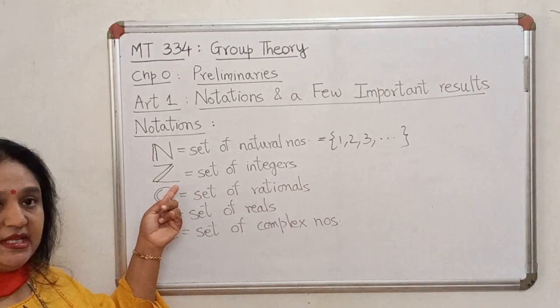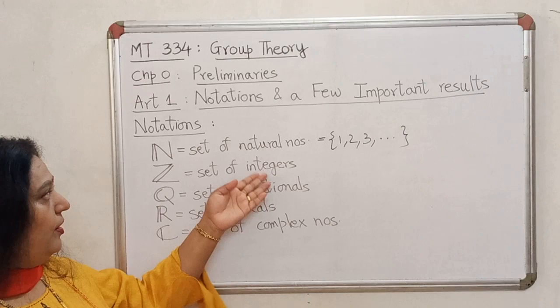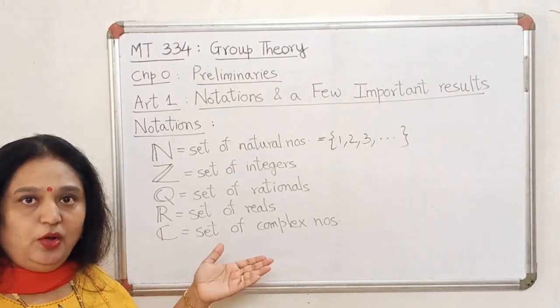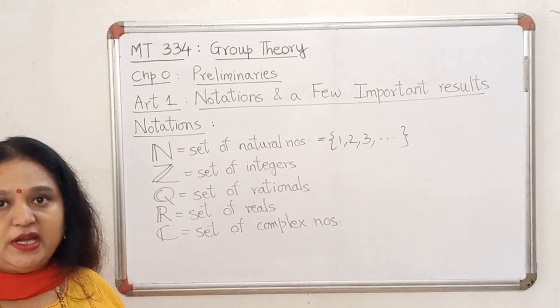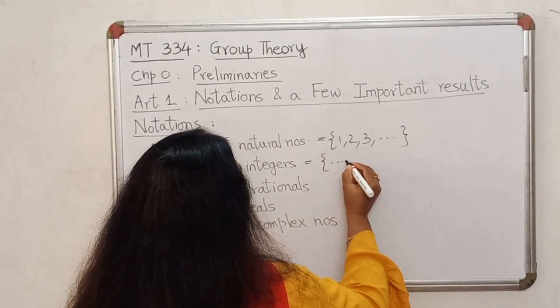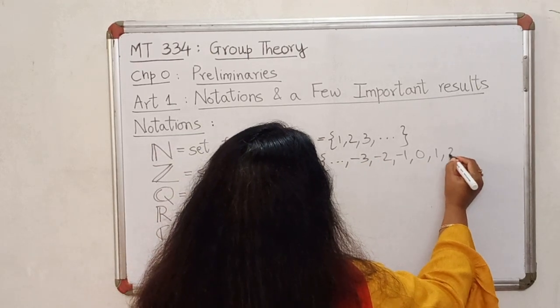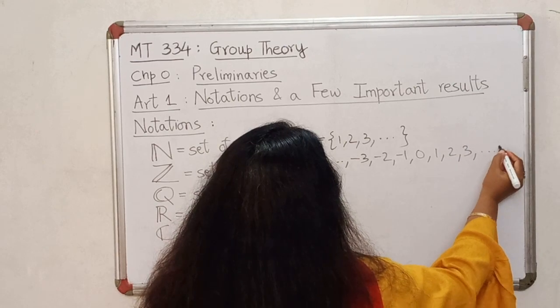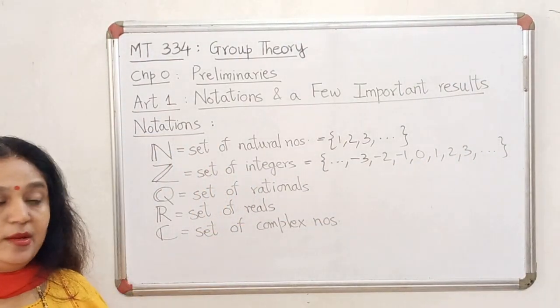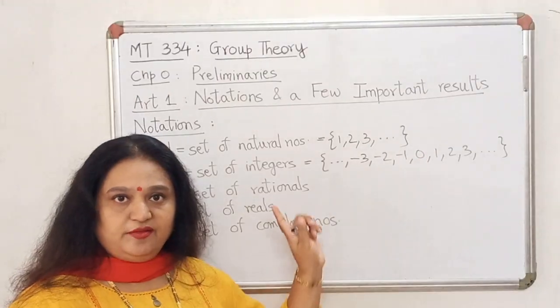We then come to the set of integers denoted by Z. In the set of integers we have all our natural numbers. Along with that we have 0 and we have the negative integers too. So our set of integers looks somewhat like this. We have the negative integers, 0 as well as the positive integers. Now remember 0 is neither positive nor negative.